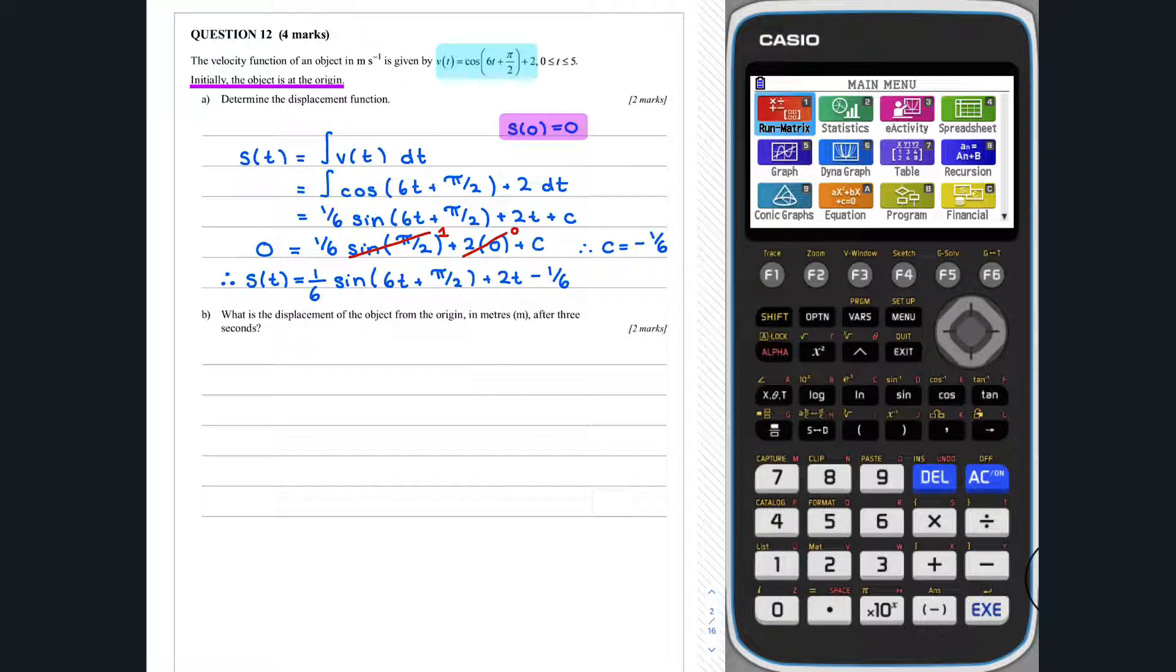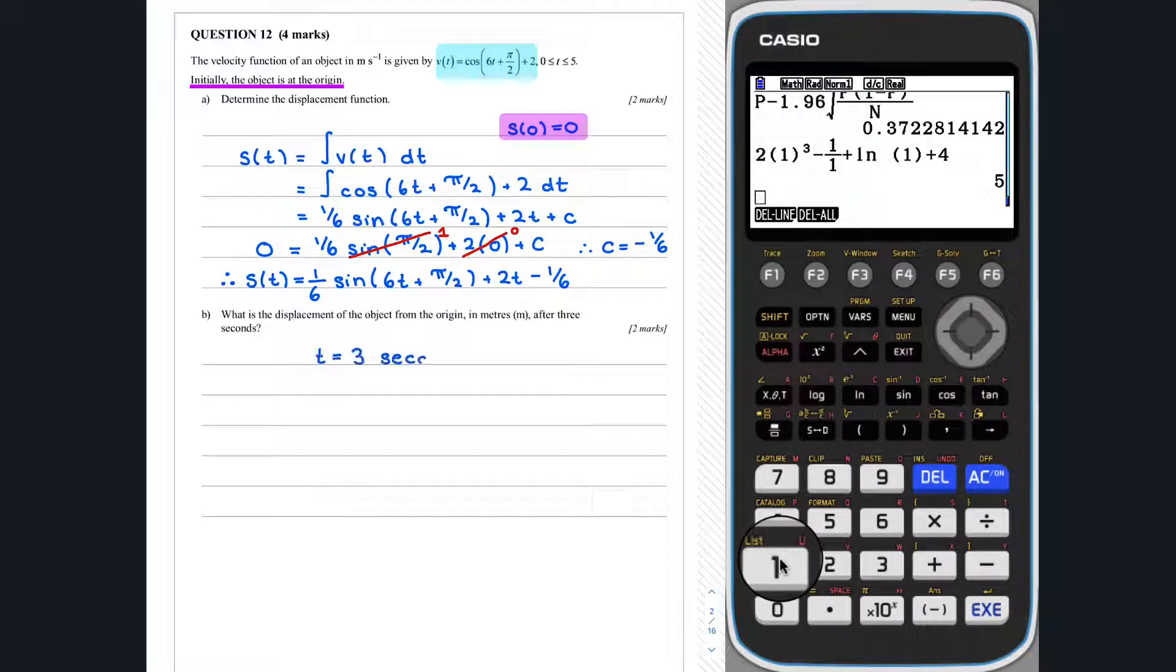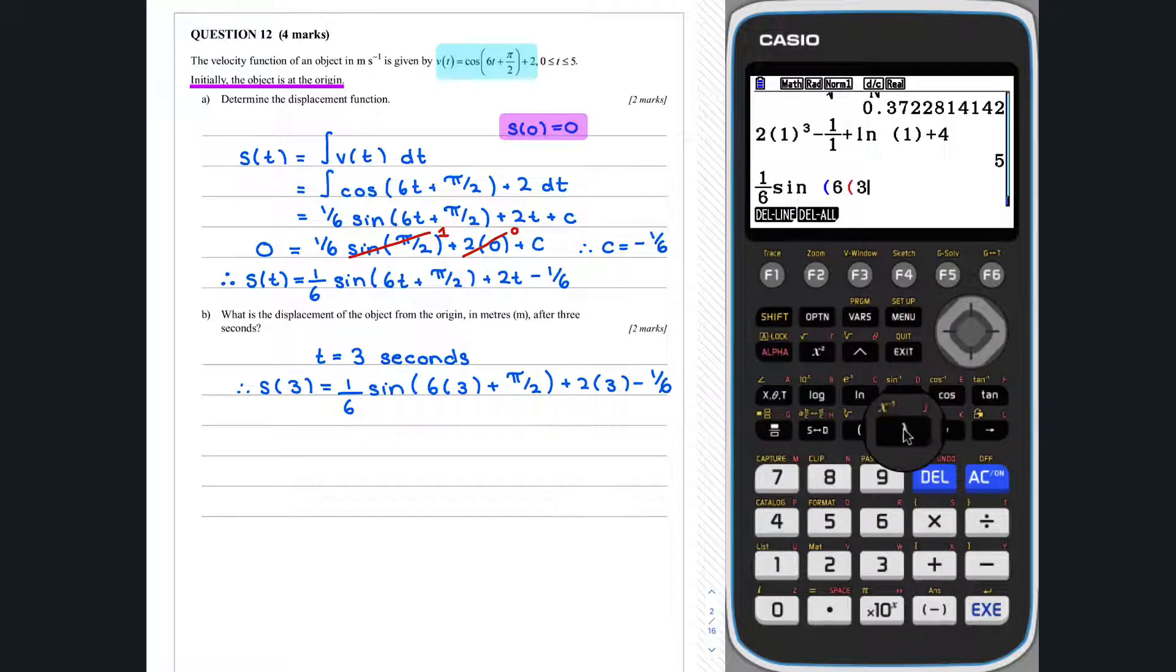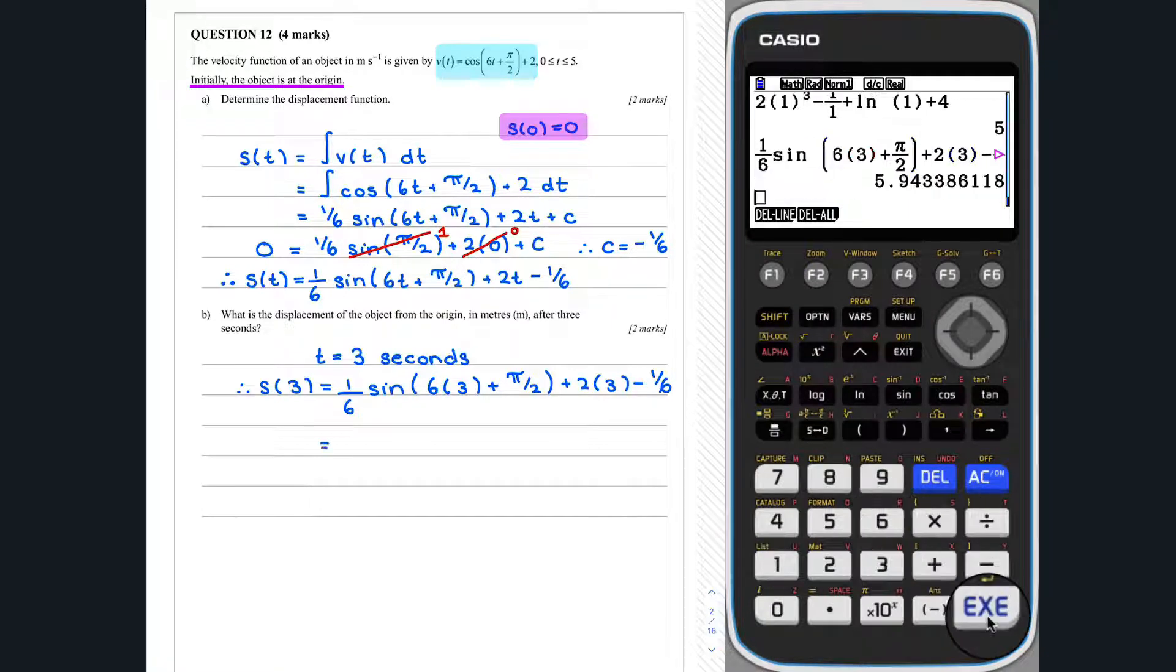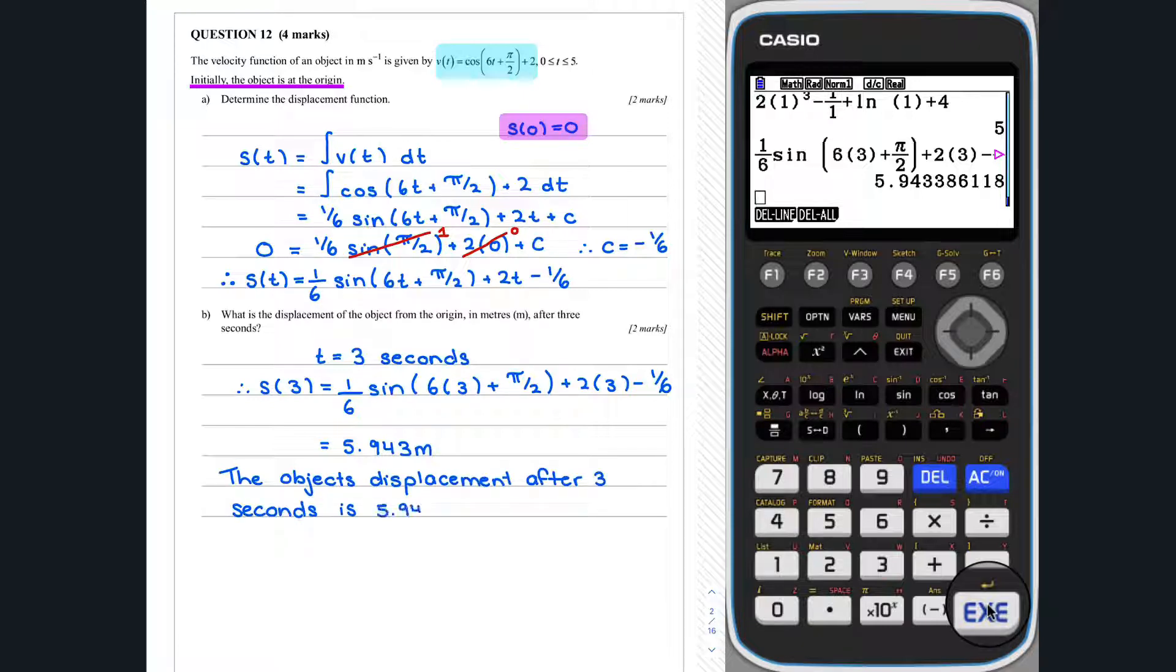Question 12, part b. To determine the displacement of the object after 3 seconds, we can calculate s at 3 by substituting t into our displacement equation found in part a. The displacement is 5.943 meters.